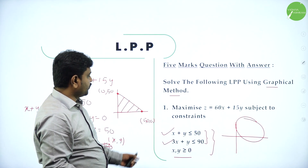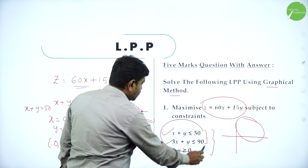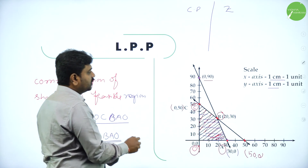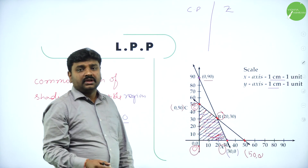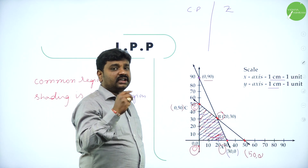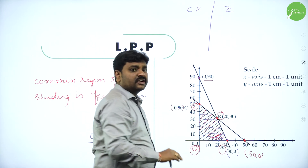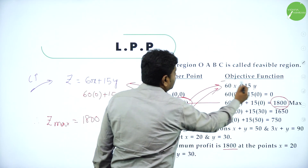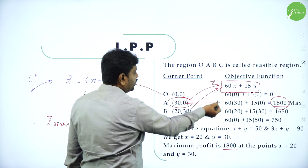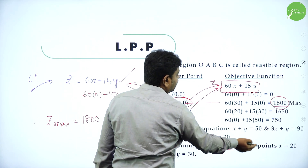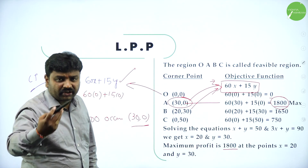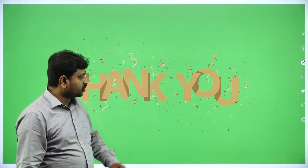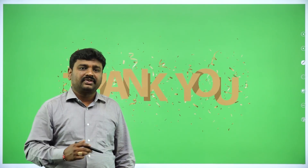In summary: the constraints are drawn as graphs and shaded. The common region of shading is the feasible region. Vertices of the feasible region are corner points. Substitute corner points into the objective function Z to get values. For the first problem, maximum Z = 1800 and minimum Z = 0. If they want maximum, write maximum; if minimum, write minimum. This has been a brief introduction to LPP and graphical solution. In the next session, we will do more problems. Thanks for attending.